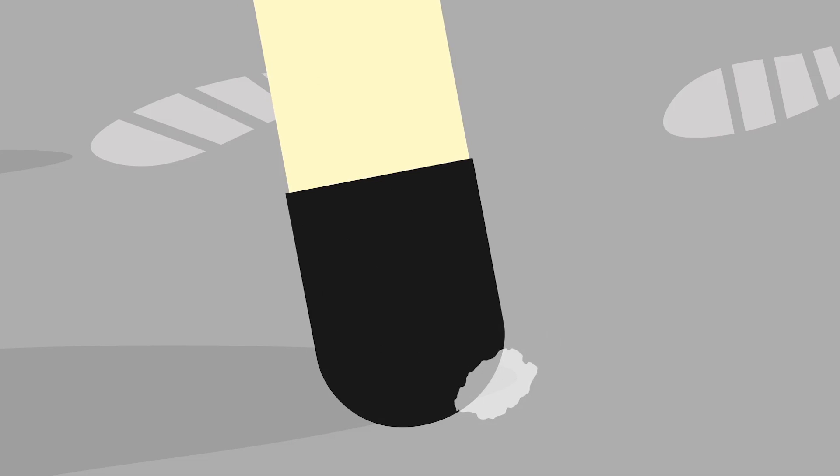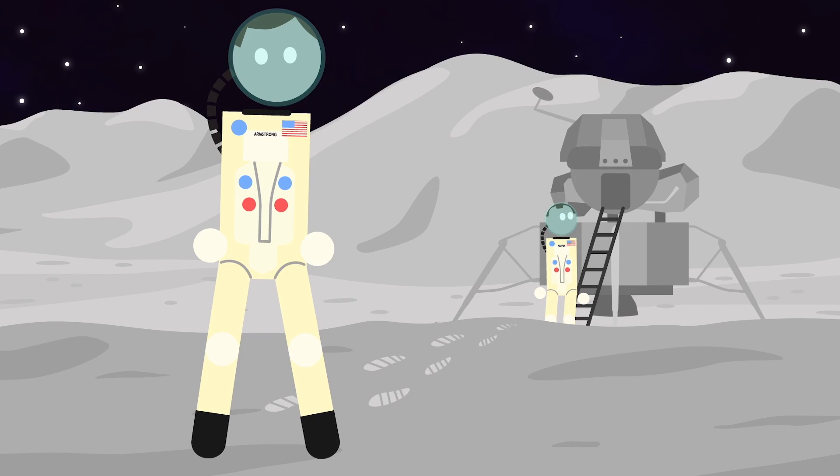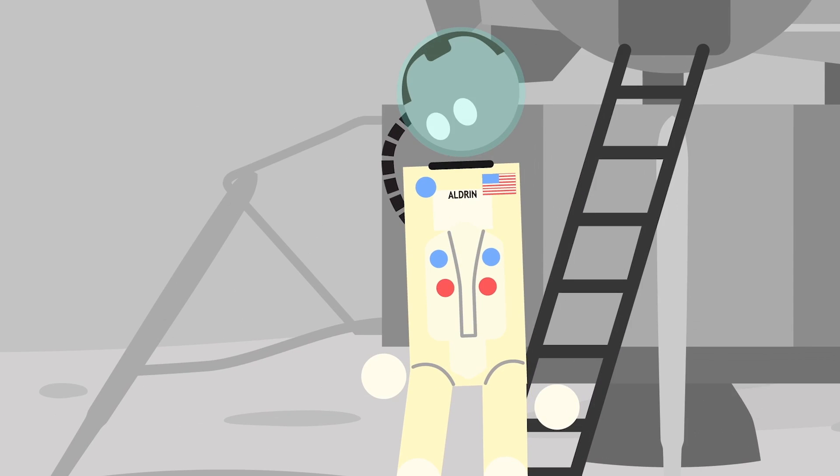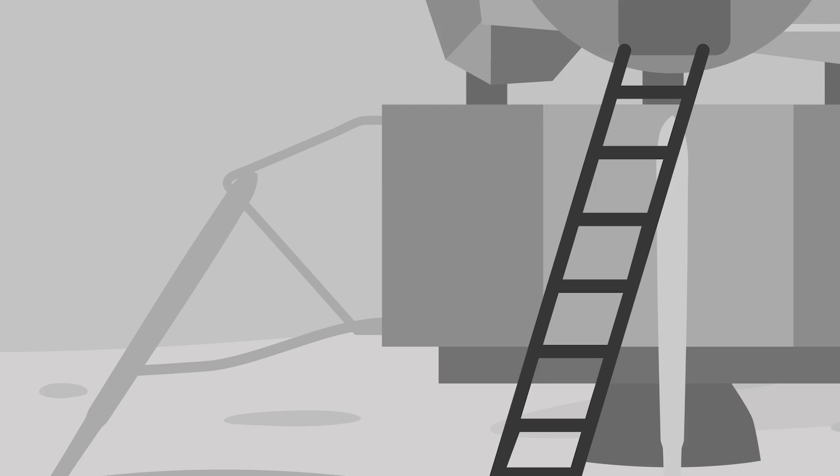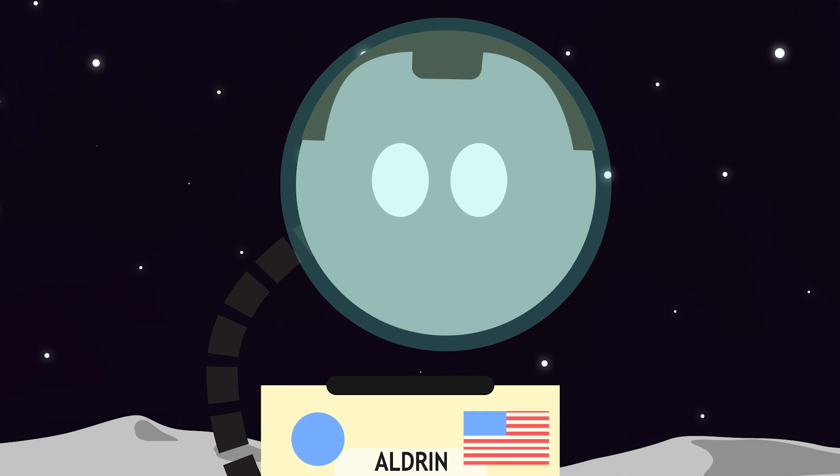First man on the moon was Neil Armstrong, but he's not the one to finish our song. Another astronaut up there with him was the first one to wee, Buzz Aldrin.